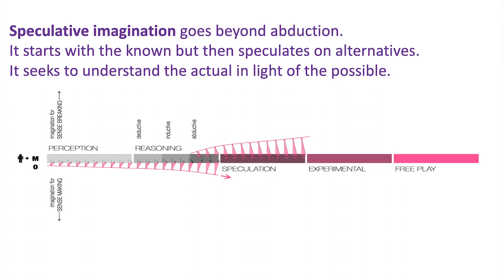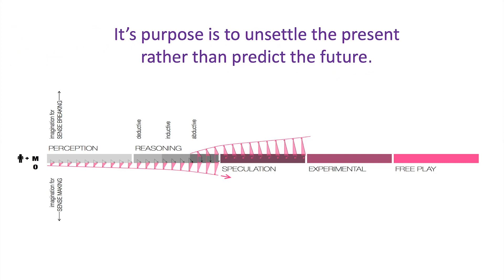Moving further along the spectrum, we enter speculative imagination — which goes beyond abduction. It starts with the known but speculates on alternatives. It seeks to understand the actual in the light of the possible. Its purpose, familiar to many foresight practitioners, is to unsettle the present rather than to predict the future. We should dwell on that: using imagination to break sense and then filling that expanded gap with hypotheses about what could be.